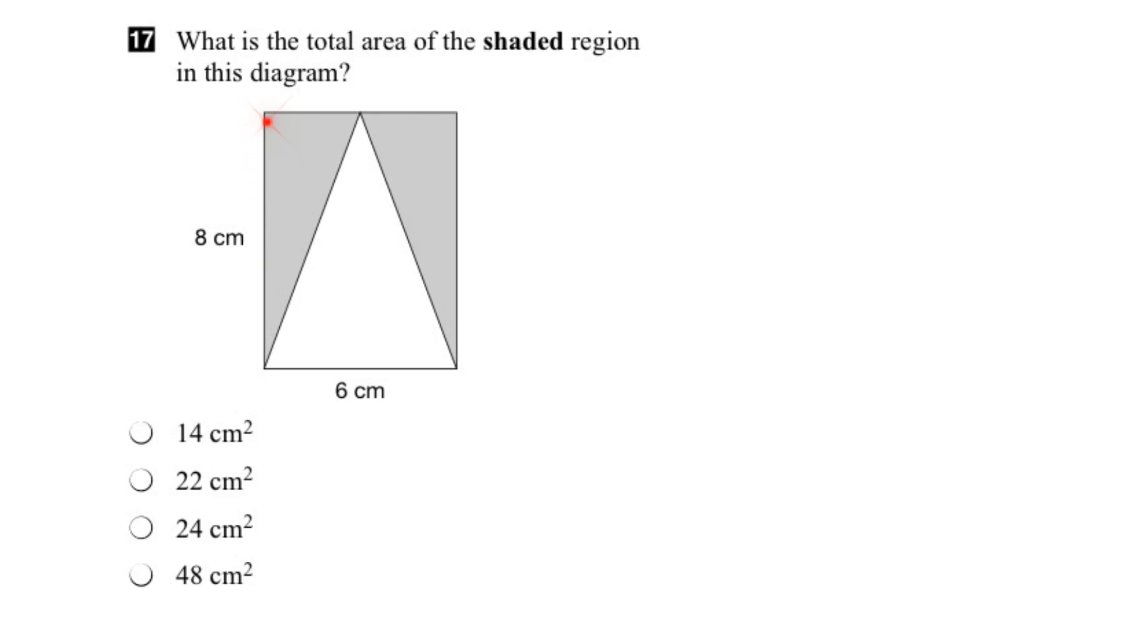In this question, we have to find the total area of the shaded region. If we look at the diagram, we can see that it's made up of a rectangle and a triangle inside the rectangle.